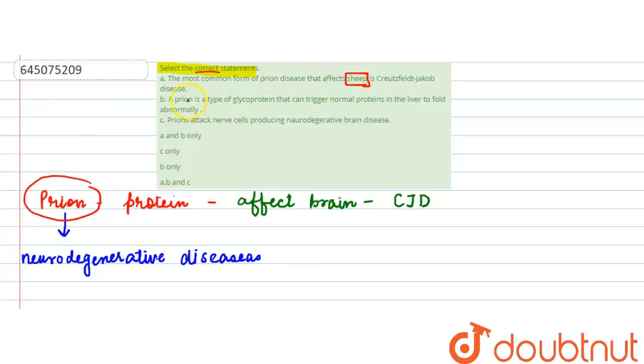Then we have the second statement that says a prion is a type of glycoprotein that can trigger normal protein in liver to fold abnormally. Again, it is wrong because at the place of liver it should have been brain.